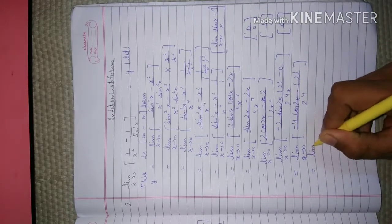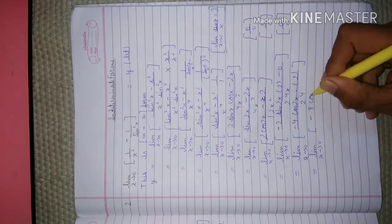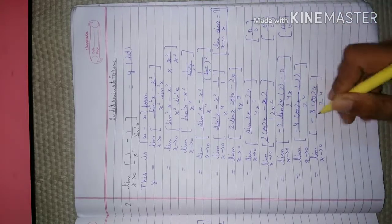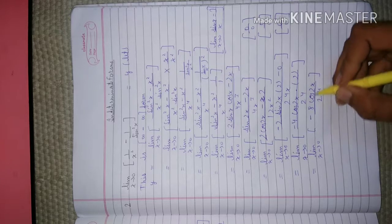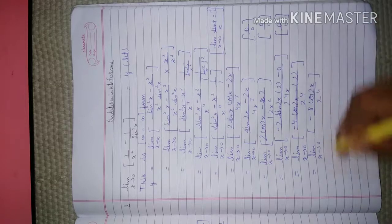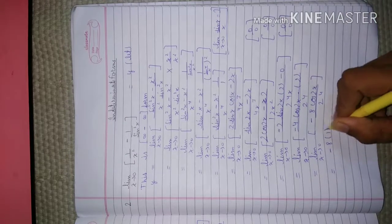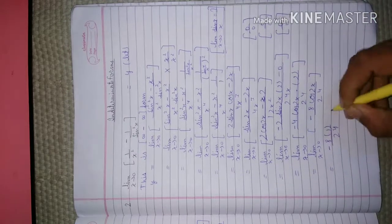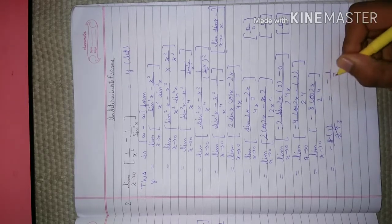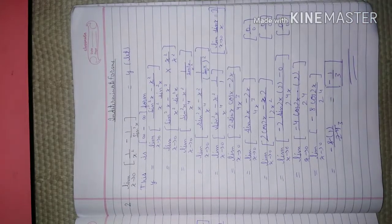On simplifying it becomes: limit x tends to 0 of minus 8 cos(2x) upon 24. When we put x equals to 0, cos(0) equals 1. Therefore, putting x equals to 0: 8 and 24 simplify down to give 1 by 3. Therefore, the answer is minus 1 by 3. This is our answer. Thank you for watching the video.